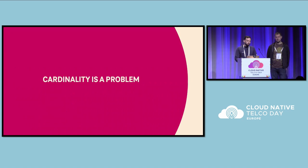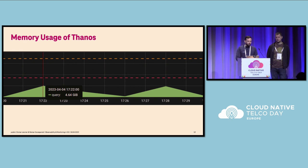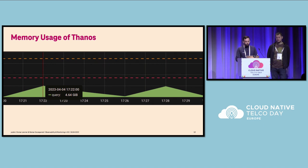We had huge problems with cardinality. Inside Prometheus we found something like 70,000 time series, and querying them and sending them to another sink is a problem. Thanos was using like 4.6 gigabytes of RAM during queries when we tried to scrape everything, and we had queries that took like 20-something seconds. If we want to query this data every 30 seconds you can already see it becomes a problem. With 5,000 more time series it's not going to work out. Cardinality with Prometheus is one of the biggest issues.